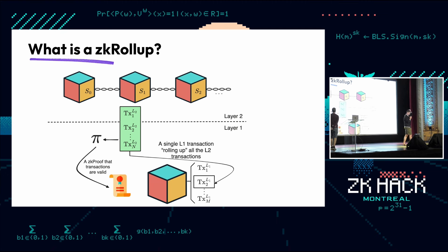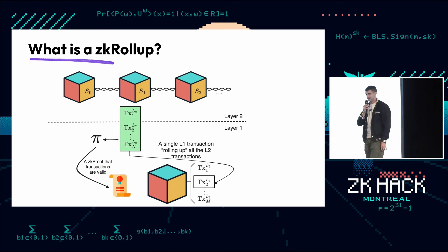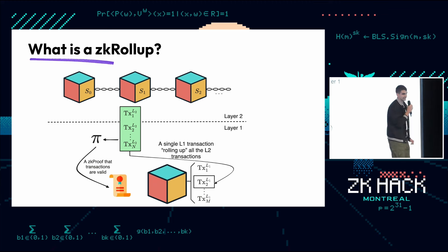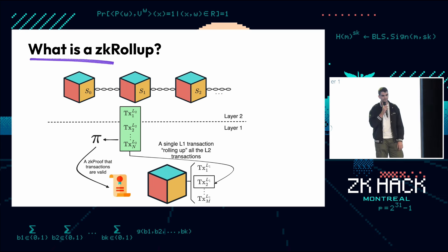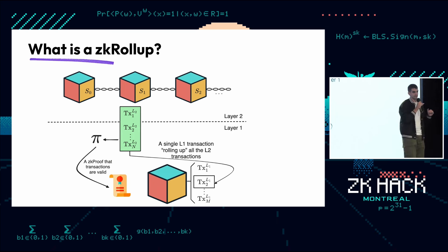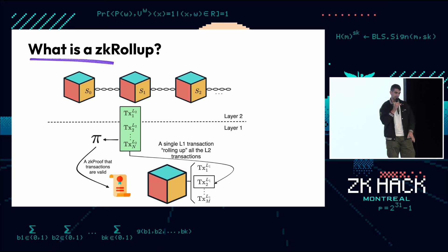Let's start with the basics. I'm sure that most of the people in this room know what a ZKVM is, what a ZK rollup is, and all this stuff. But if just one person doesn't know, I think the slide will be worth it. I like to summarize a ZK rollup as an application that lives between two layers — layer 2 and layer 1. Layer 2 is the execution layer and layer 1 is the verification layer.